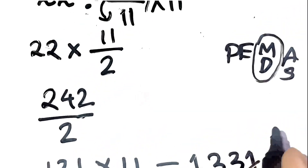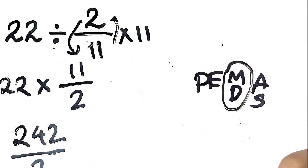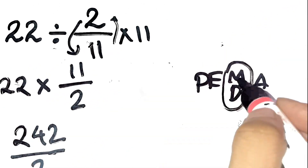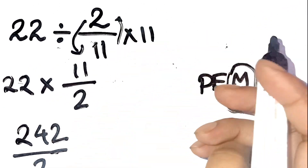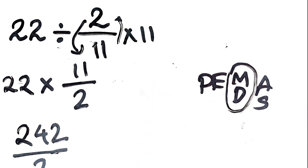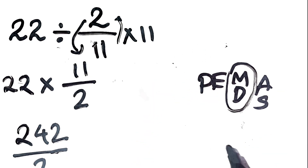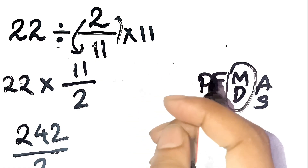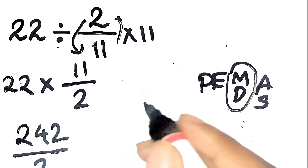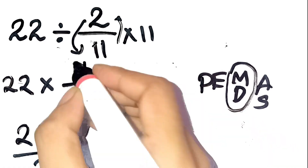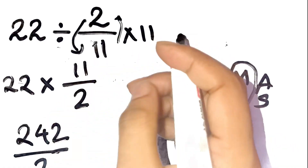It's wild how a simple misunderstanding about the left-to-right rule completely flips the outcome. So next time you see something like this, don't rush to cancel numbers. Slow down and go step by step. And hey, if you've got a different argument or another way to look at it, drop it in the comments — I'd love to see your reasoning.